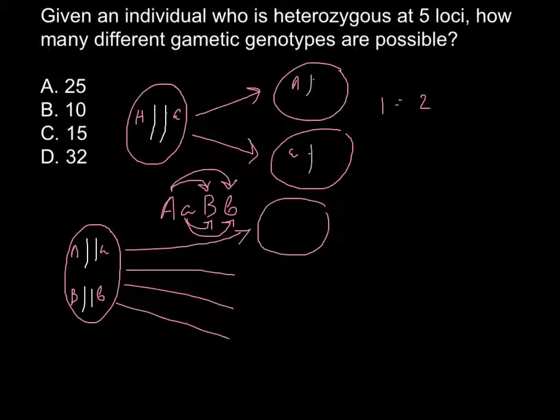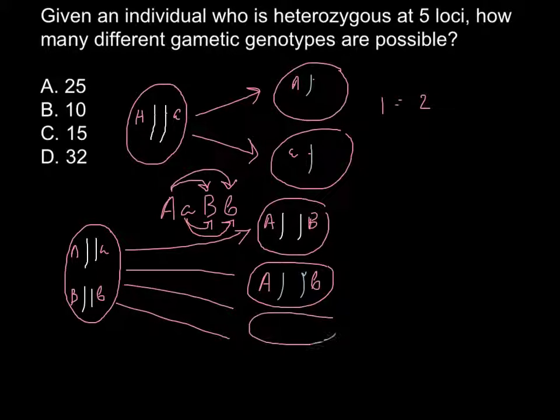Here this can be capital A and capital B. Another gamete can be capital A and small b. Another one can be small a and capital B. And the fourth one can be small a and small b. So as you see here, two pairs of chromosomes may produce four types of gametes.